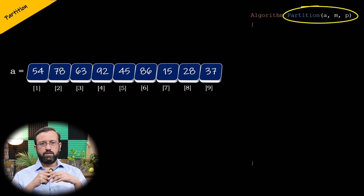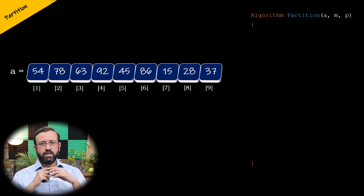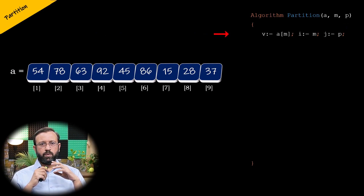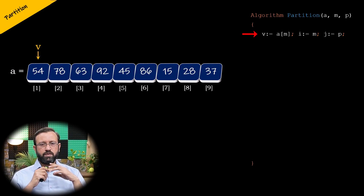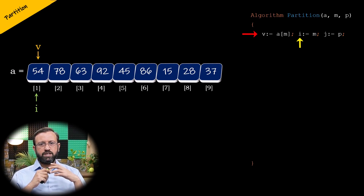This algorithm takes three parameters. The first parameter is array A, where the elements are stored. The second parameter is M, that is the index of the first element, and the third parameter is P, which is the index of the last element. Within this algorithm, we will have a variable V, which is considered as the pivot element, and initialized to A of M, since we are assuming the first element as the pivot element. We will also have a variable I, which is used to move the index from left to right, and is initialized to M.